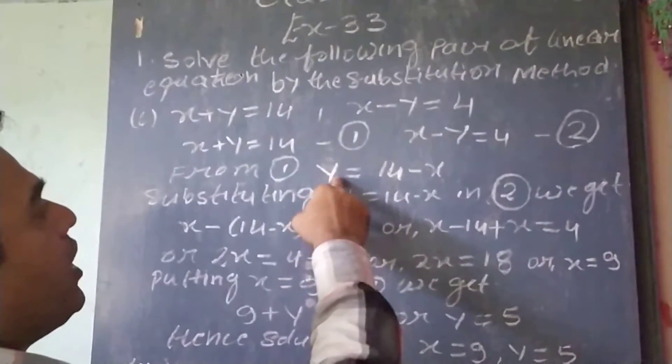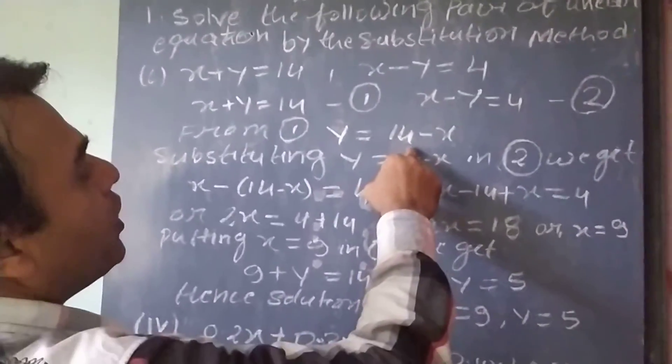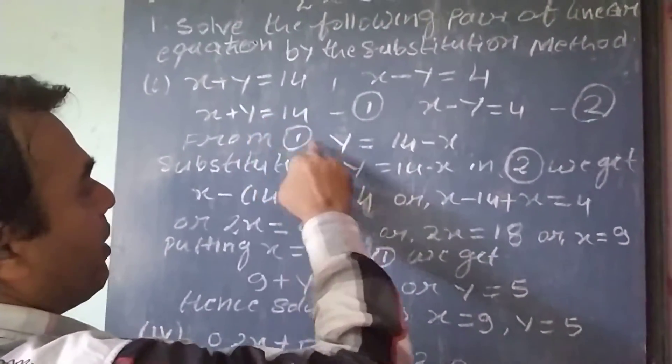From equation 1, y equal to 14 minus x, as you can see, 14 minus x.